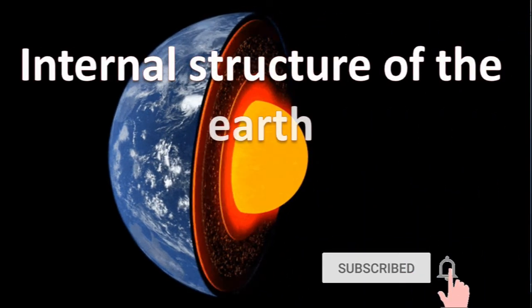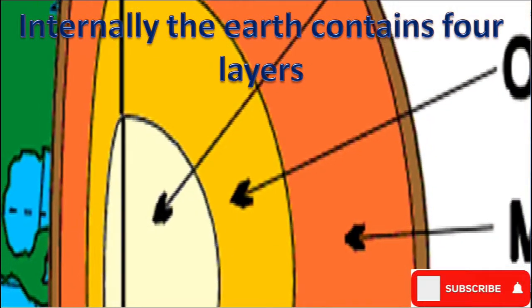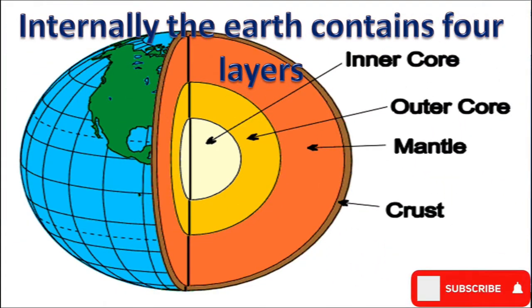Internal structure of the earth. Internally, the earth contains four layers: crust, mantle, outer core, and inner core.